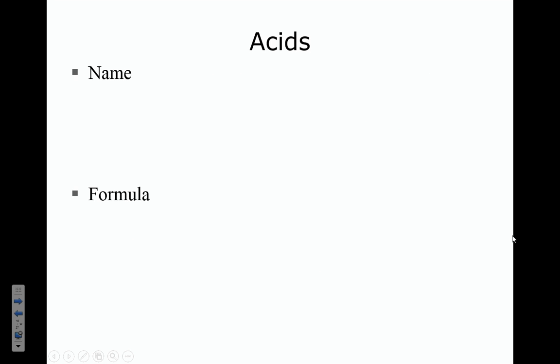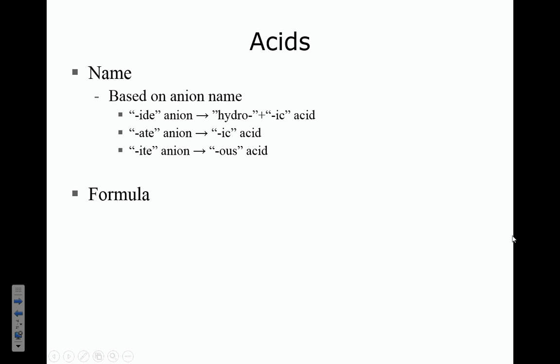To summarize: '-ides' become 'hydro-ic', '-ates' become '-ic', and '-ites' become '-ous'. For example, H2SO3 — look up the anion after the H: SO3 is sulfite. '-ite' becomes '-ous', and remember sulfur compounds keep the name 'sulfur', so this becomes sulfurous acid, not 'sulfus acid'. If you wrote 'sulfous acid', that would still show you applied the rule properly.